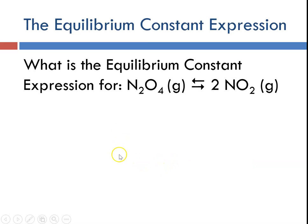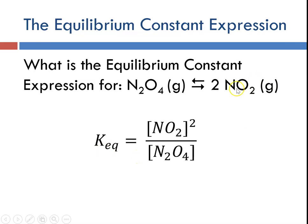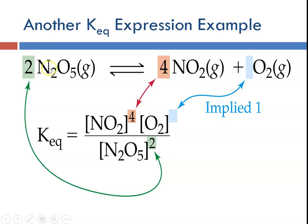For the dinitrogen tetroxide and nitrogen dioxide reaction, K_eq equals [NO₂] raised to the second power over [N₂O₄] raised to the first power, and they're all in the gas phase. Another example would be dinitrogen pentoxide forming nitrogen dioxide and oxygen — product raised to its coefficient, product raised to its coefficient, with an implied one, and reactant raised to its coefficient power.